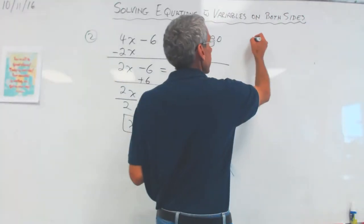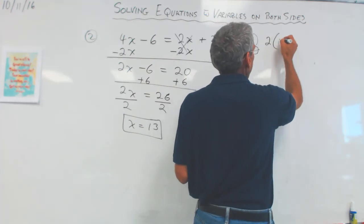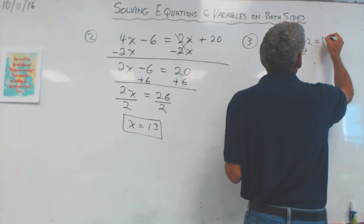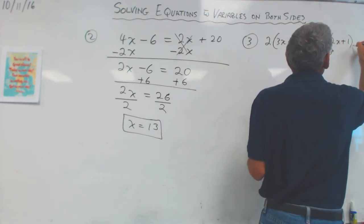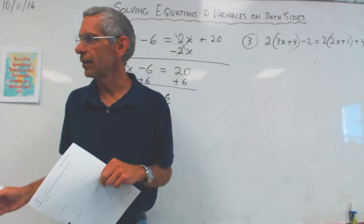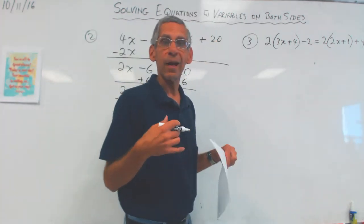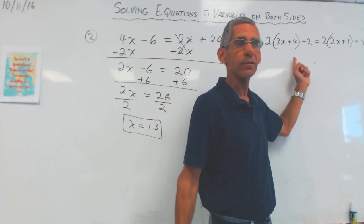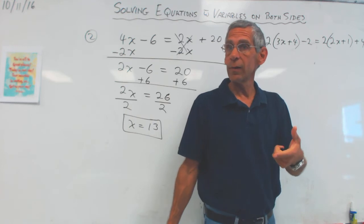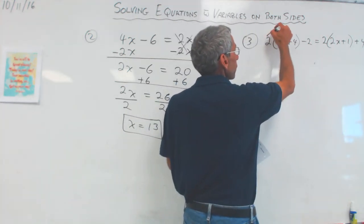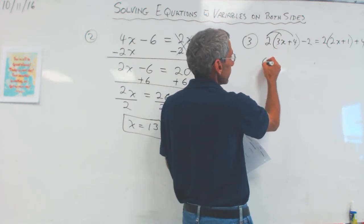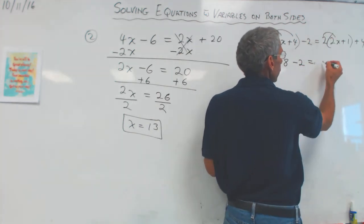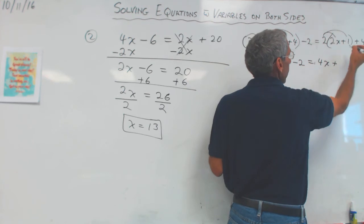That was number 2. Let's do number 3 over here. Let's say I did something like this. 2 times (3x plus 4) minus 2 equals 2 times (2x plus 1) plus 4. That looks a little scarier, doesn't it? I wouldn't want to do that on my pet. So I'm going to definitely, but I do notice, here's my equal sign. And I see there's x's over here. And I see there's x's over here. They're not, on the homework, they're not going to be this hard. But you guys know how to do this, is my point. And so let's do it. So I'm going to do my distributive property. So 2 times 3x is 6x plus 2 times 4 is 8 minus 2 equals 2 times 2x is 4x plus 2 times 1 is 2 plus 4.